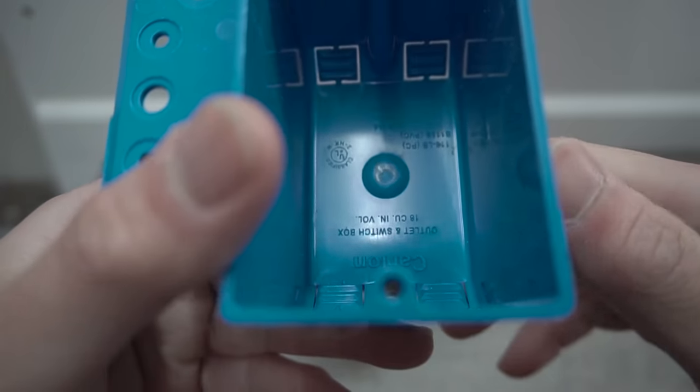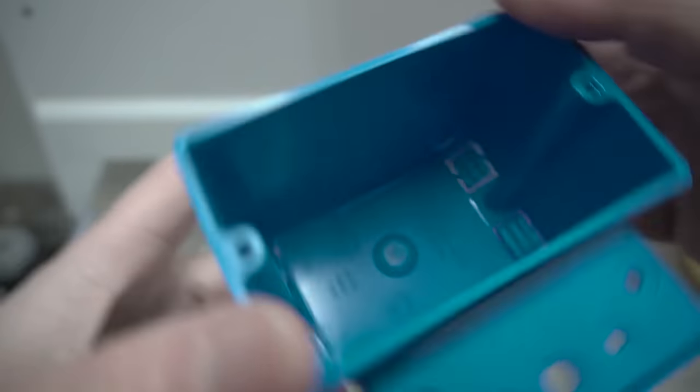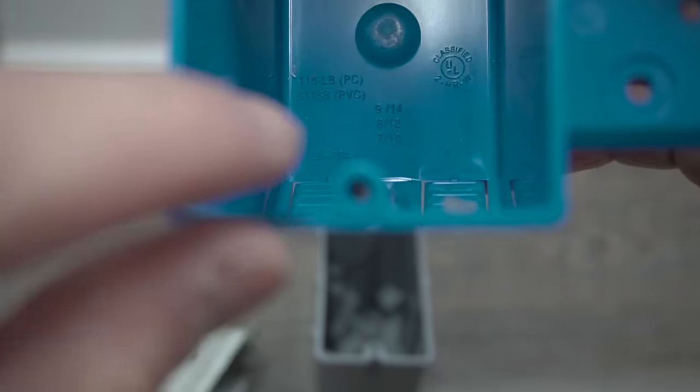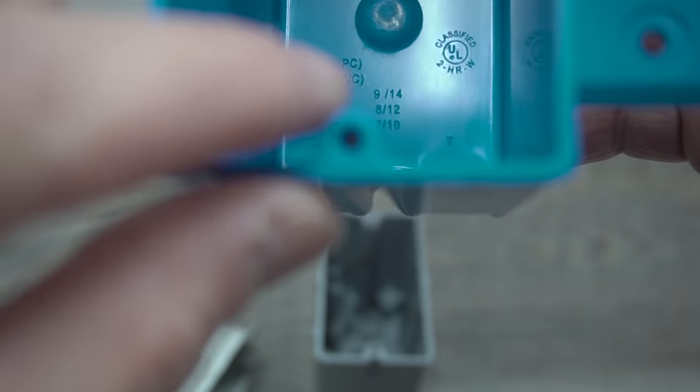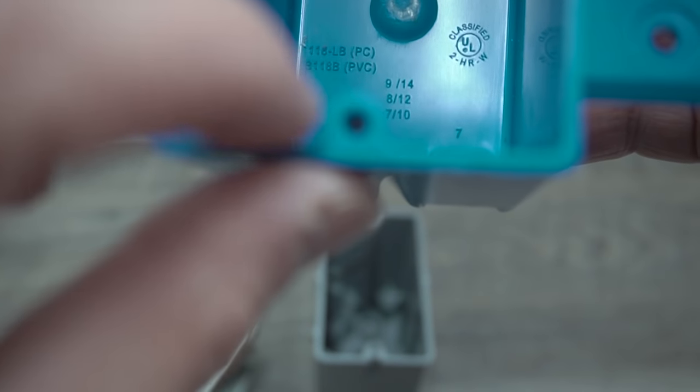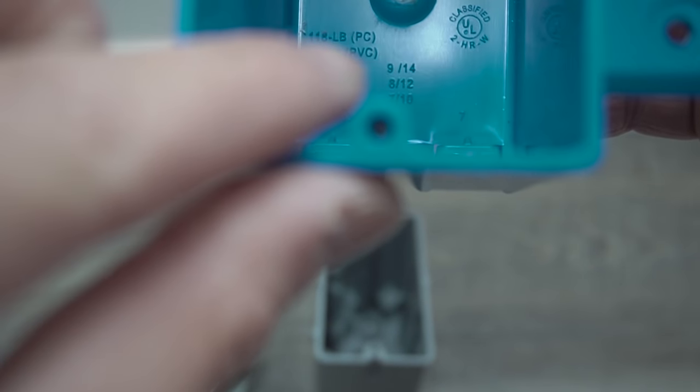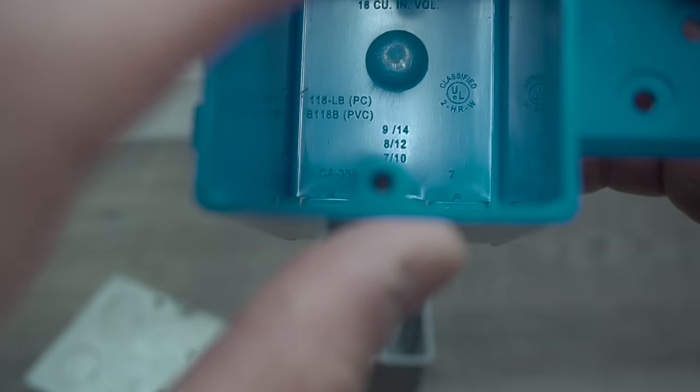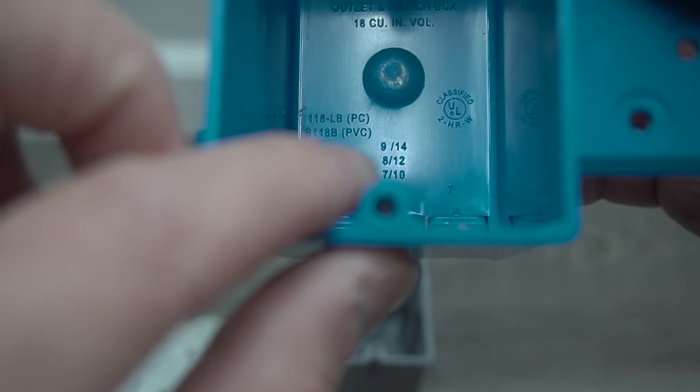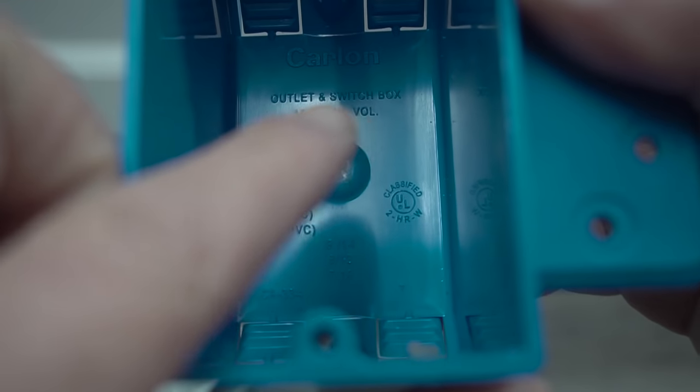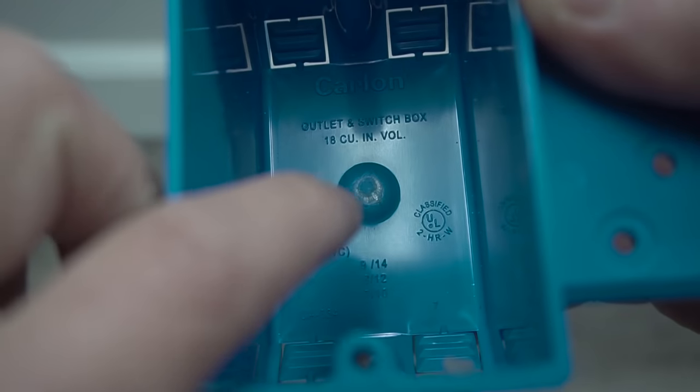When looking at these J-boxes, check what's inside. You'll see numbers like 9, 14, 8, 12, 7, 10. The right side determines wire gauges. Today we're using 12 gauge. The left side shows the number of wires that can fit. For 12 gauge, the maximum is 8 wires, with a volume of 18 cubic inches.